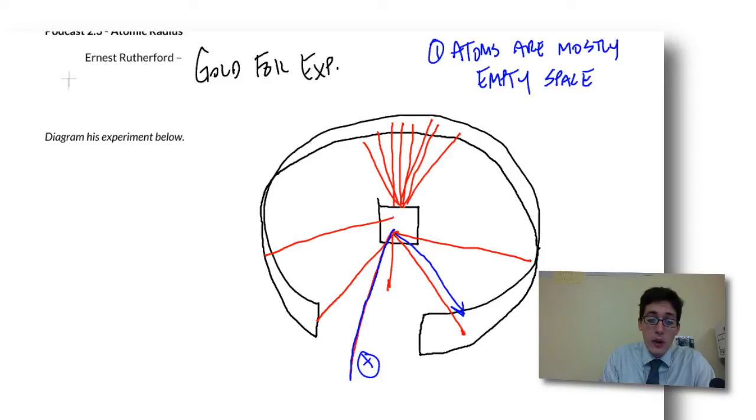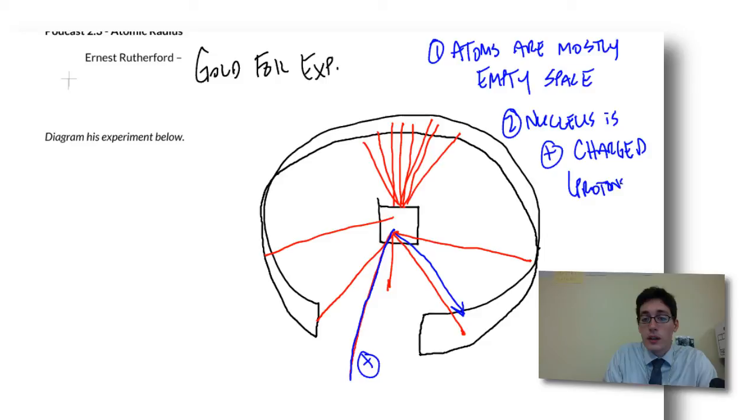And what he determined was that, well, these particles are positive. And that means that to bounce off or to repel, the nucleus of the atom is positively charged. And these are the protons.